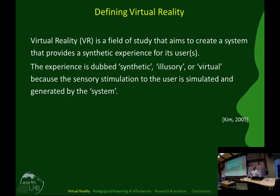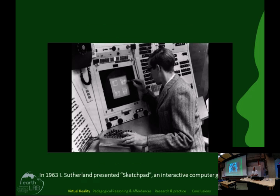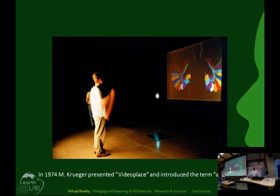This is a quite recent definition by Kim: virtual reality is a field of study that aims to create a system that provides a synthetic experience to its user or users. We can say that this experience is synthetic, illusory, or virtual because the sensory simulation to the user is simulated and generated by the system. Some history: in 1956, filmmaker Morton Heiling presented Sensorama, a mechanical virtual display device simulating 3D stereoscopic vision, motion, color, stereo sound, and emulating aromas, wind, and vibrations.